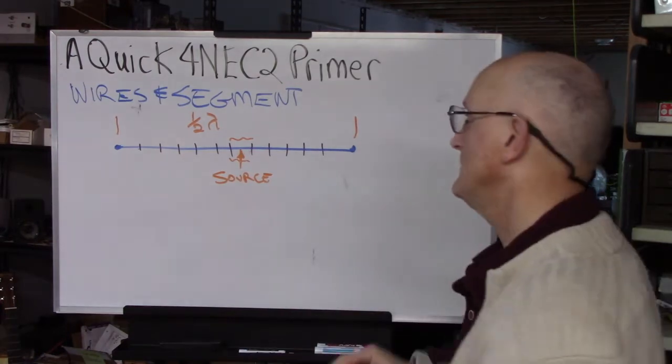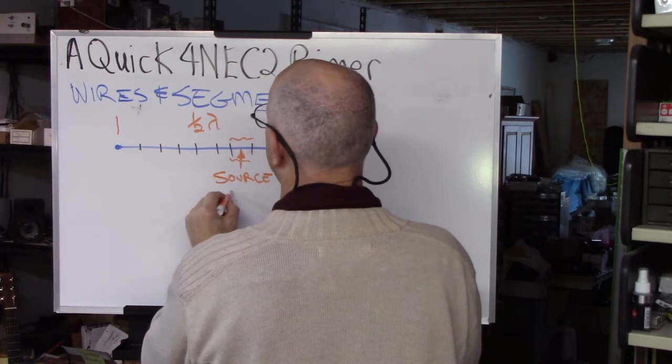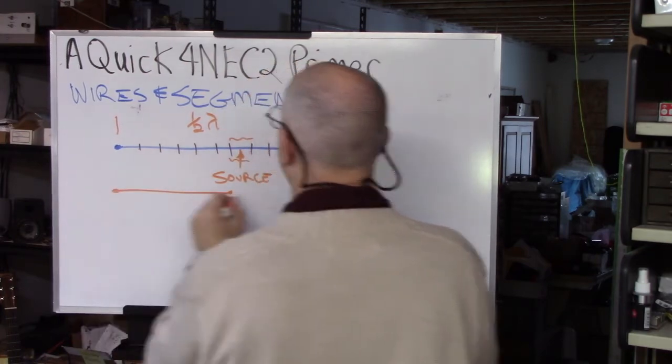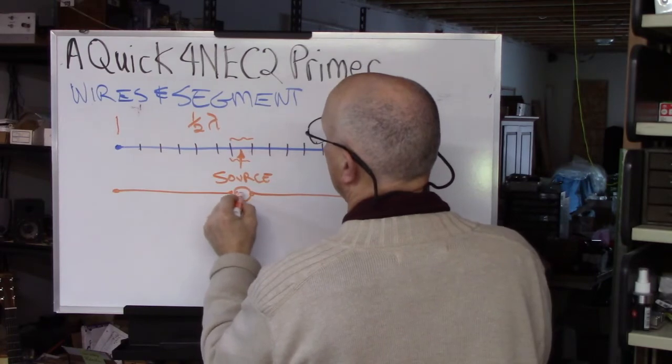in the center segment. Now what 4NEC2 does is they immediately interpret that as a wire here, a wire here, and your source here.